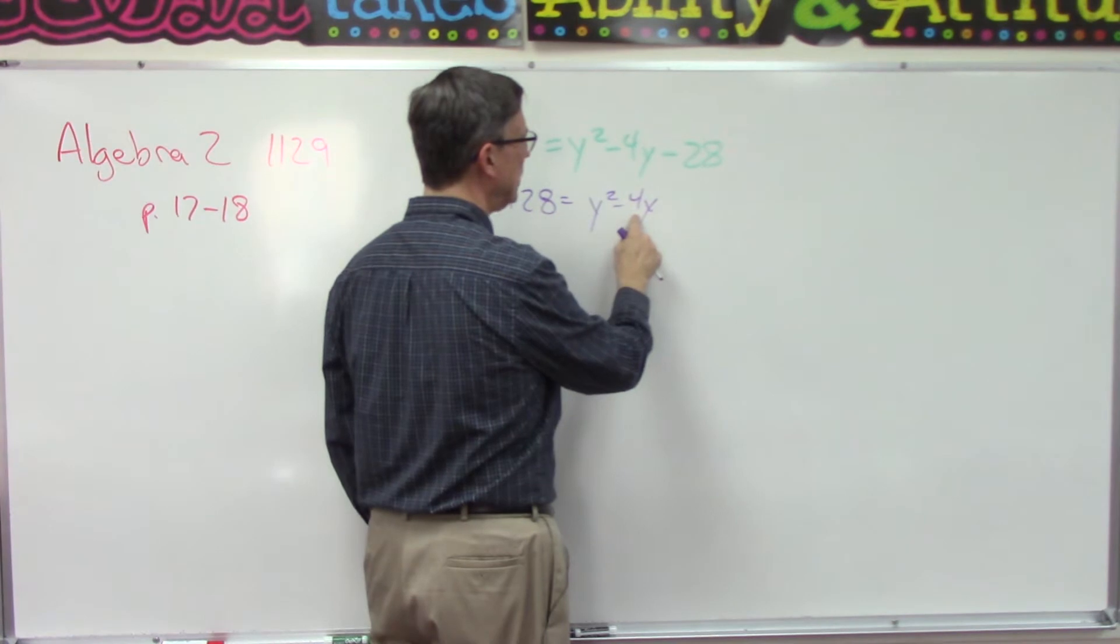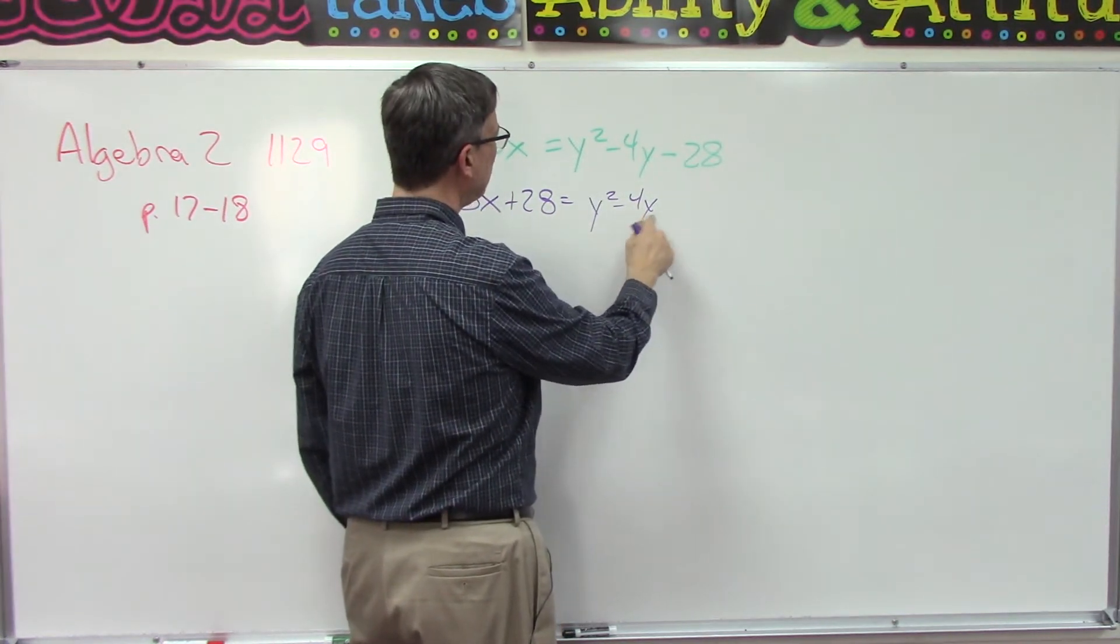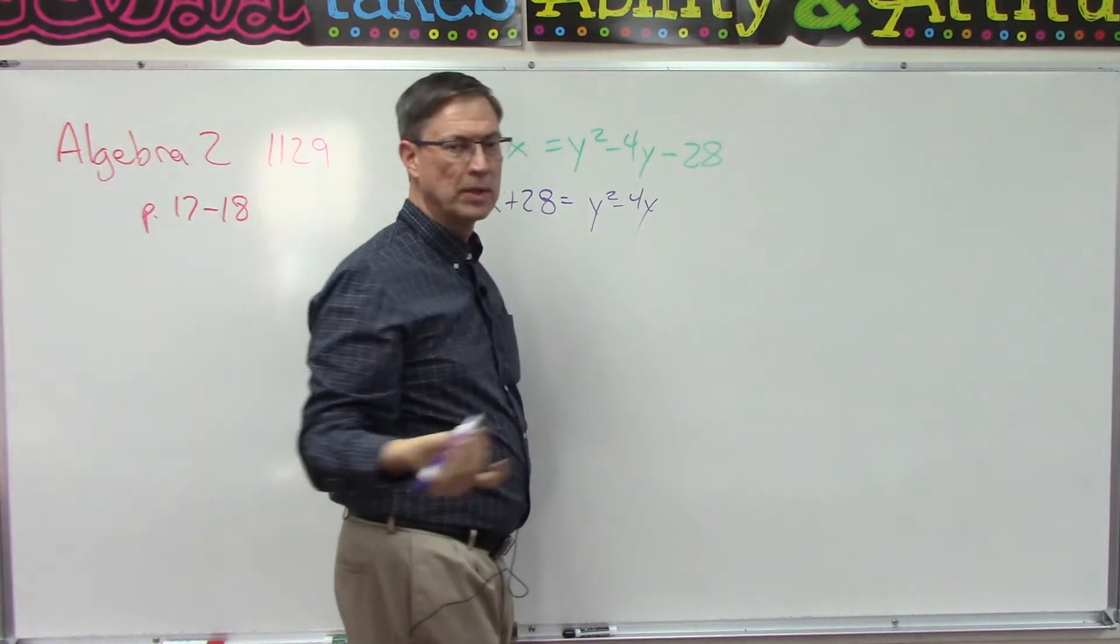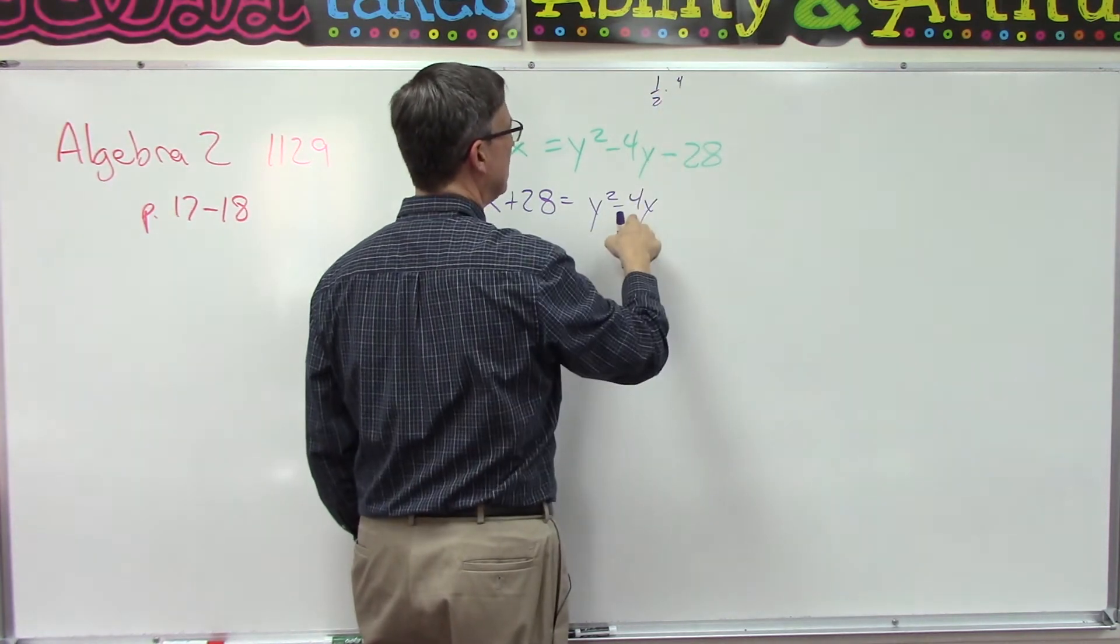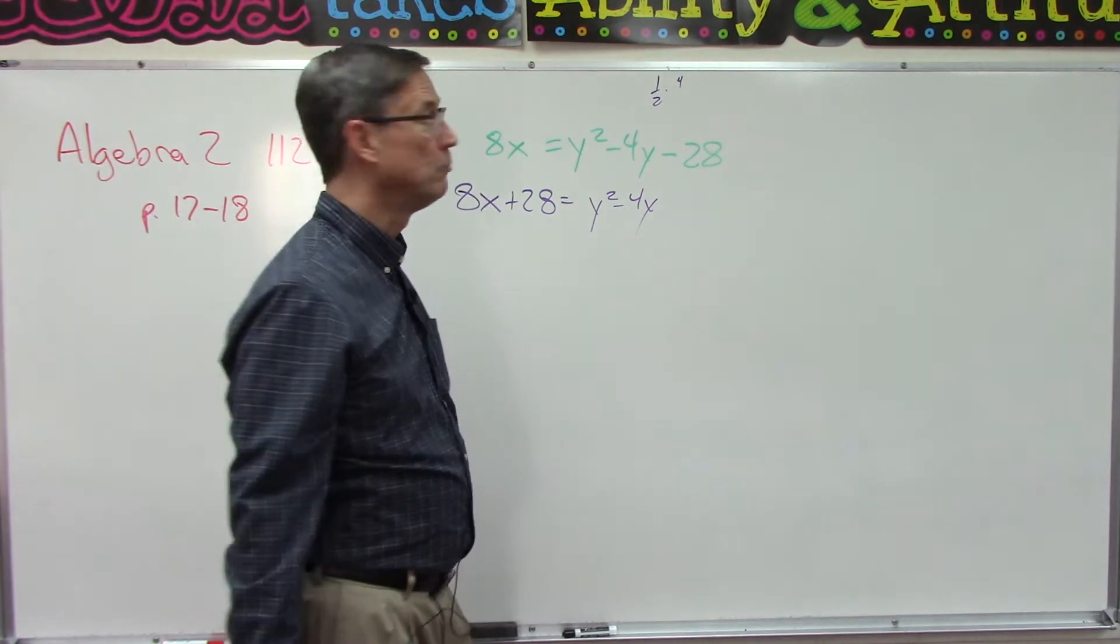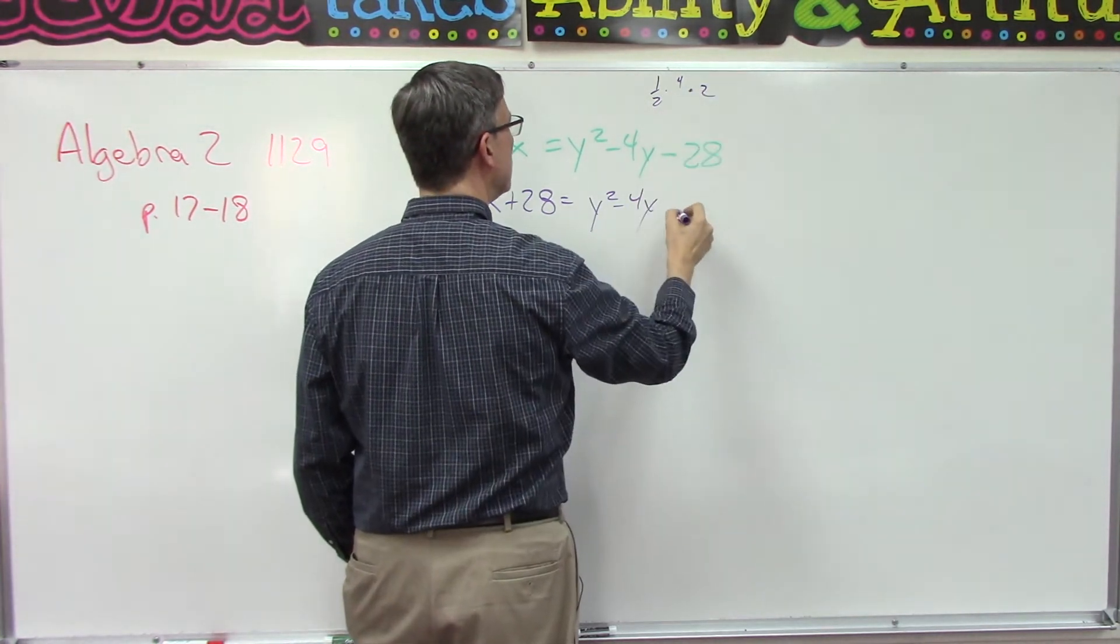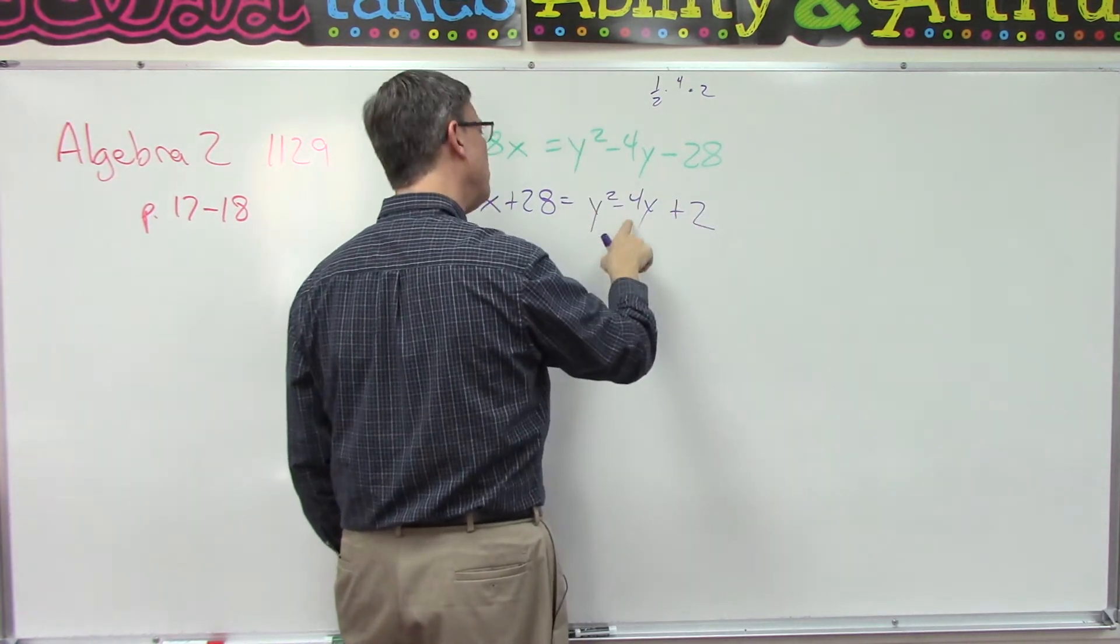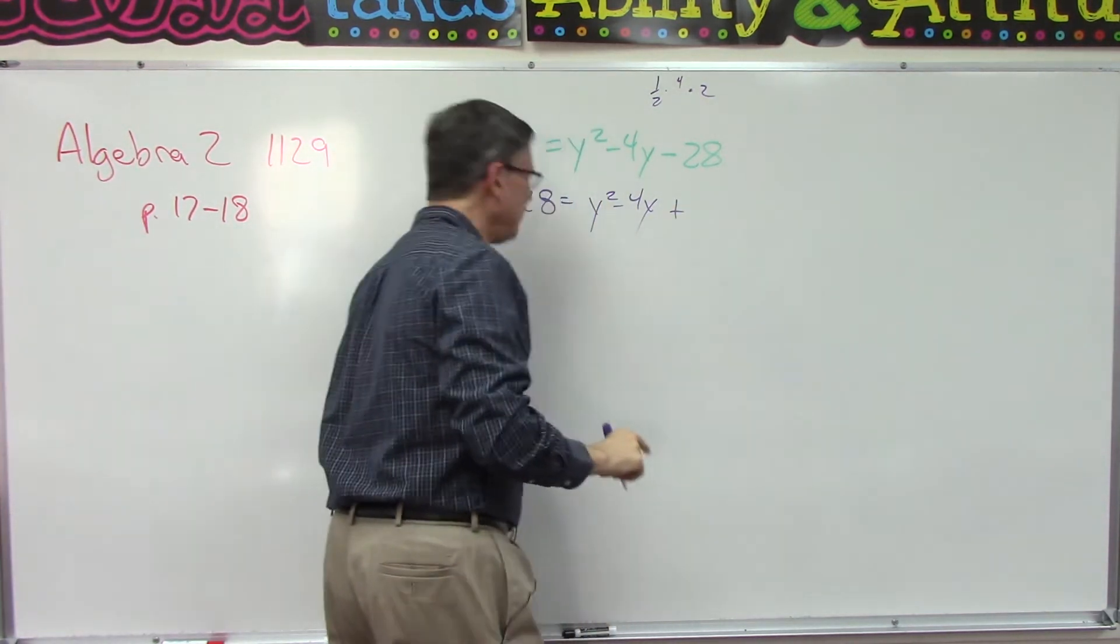half the middle term, so this y term, so half of 4. I mean that's easy, you know that's 2. But just always think of it as multiplying one-half times whatever this middle term is. Sometimes you might end up with a fraction, which is fine. So in this case we get 2. So that means we're going to add—excuse me—half the middle term squared. 2 is half the middle term,